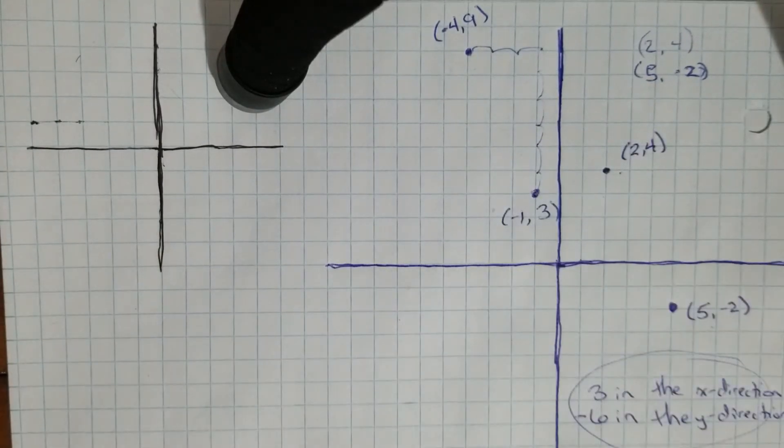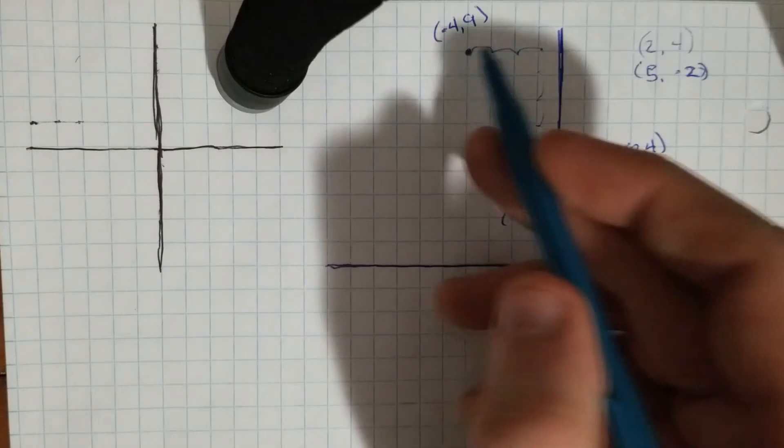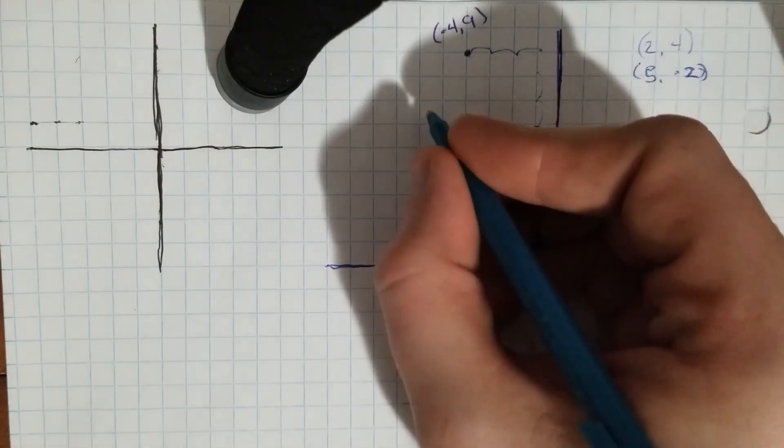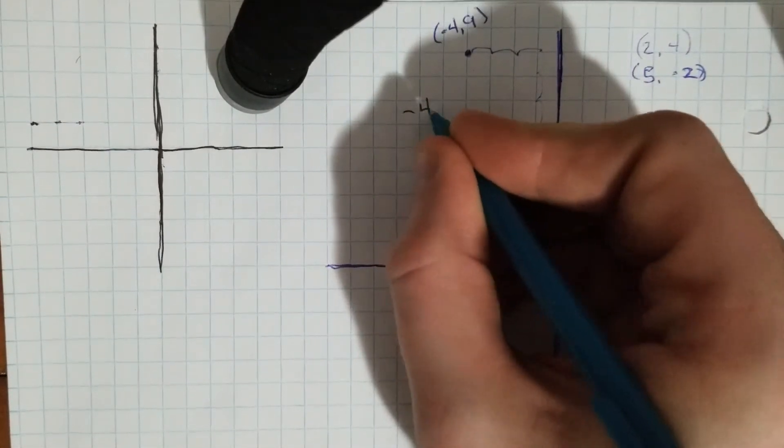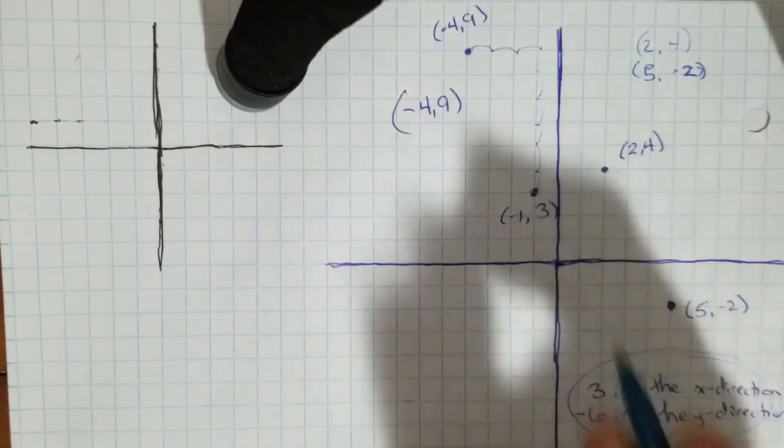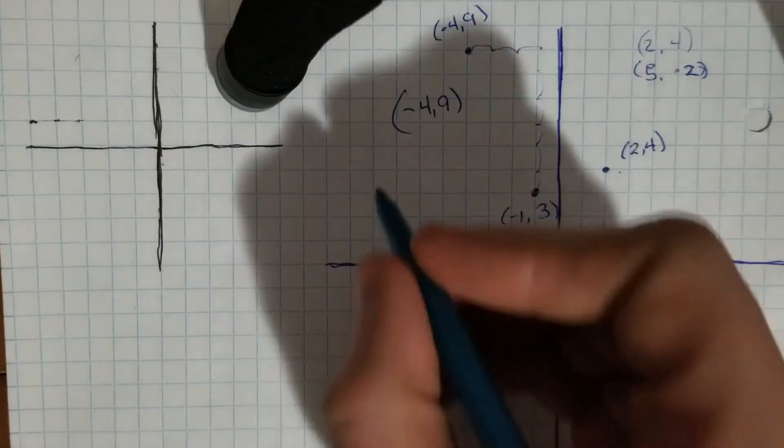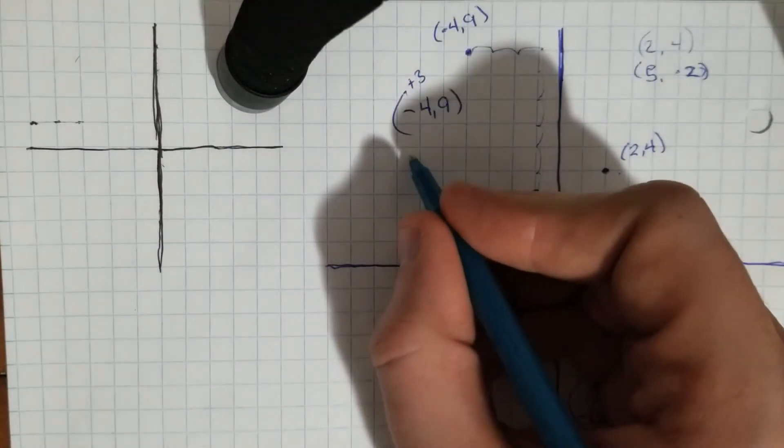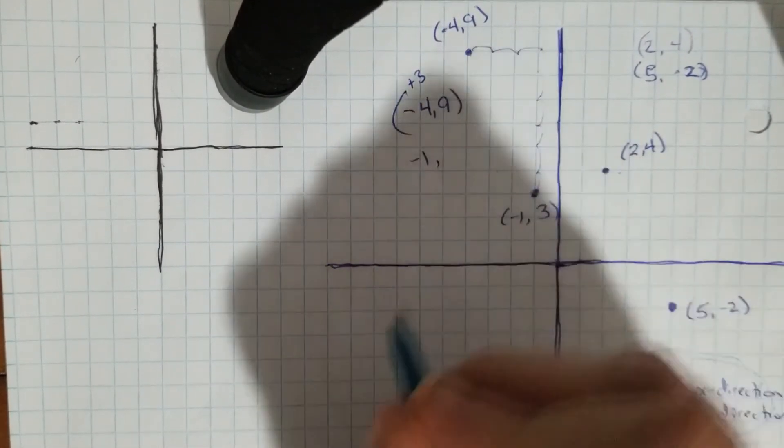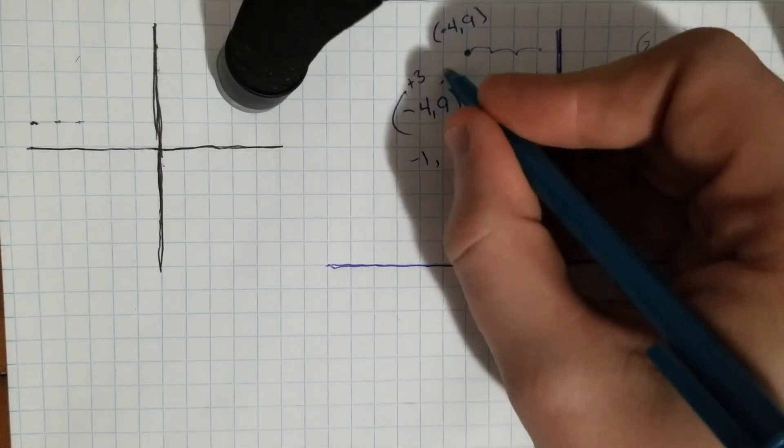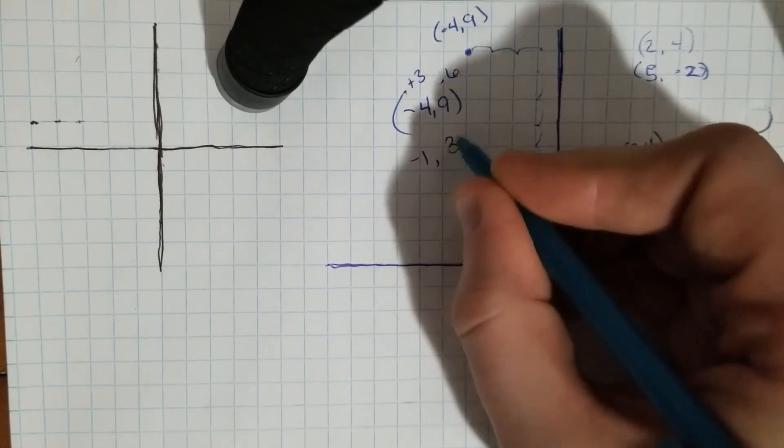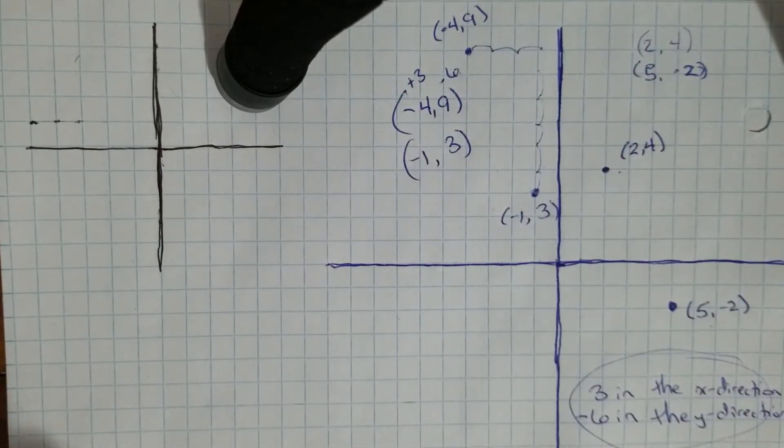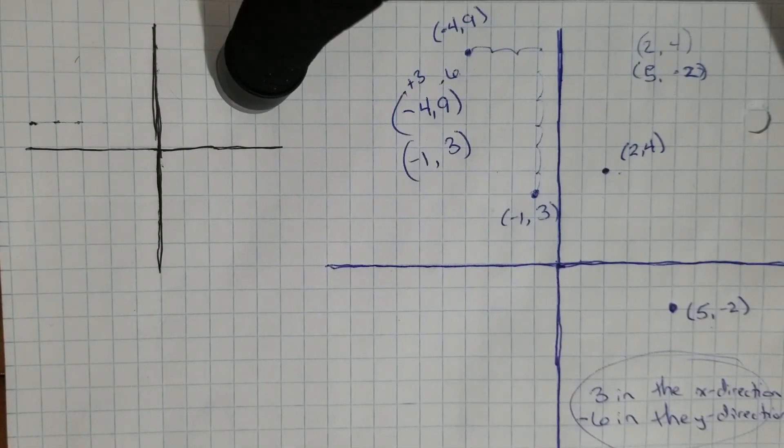Another way that we could take a look at this is just to take a look at the numbers. Okay, well our point here is (-4, 9) and we know that my translation is a plus three in the X direction, which will bring us to a -1 now, and a minus six in the Y direction, which will now bring us to a three. So we can either figure this out using a grid or graph system, or we could figure it out just simply using the coordinates that we are given.